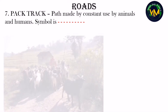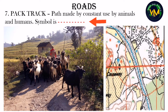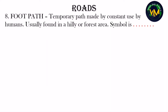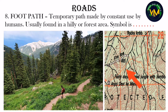Pack track: this is a path made by constant use by animals. Usually when people herd animals, the animals walking automatically creates a natural path — this is called a pack track. The symbol is a red color dash-dash-dash line. Footpath: this is a temporary path made by constant use by humans, usually found in hilly or forest areas. The symbol is red color dots. In our topographical map this is a forest area — a fairly dense mixed jungle with bamboo — and as you can see from the contour lines, this is a hilly area, so we have a footpath here, just broad enough for people to walk.